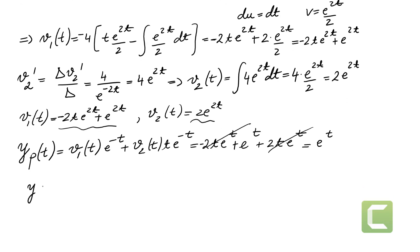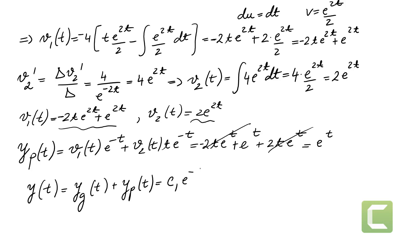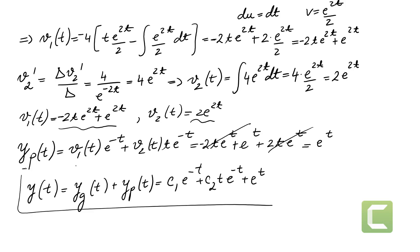The complete general solution of the equation is the homogeneous solution plus the particular solution: y(t) = c1·e^(-t) + c2·t·e^(-t) + e^t. If we have initial conditions, we can solve for c1 and c2, for which we would need two initial conditions.